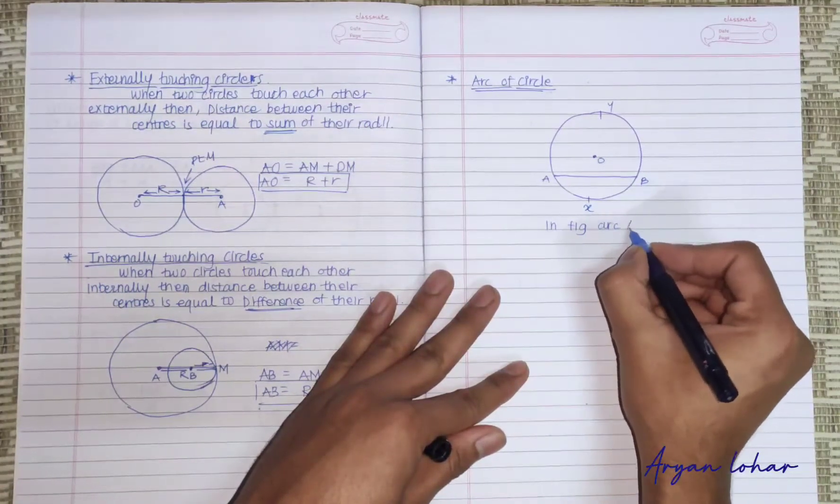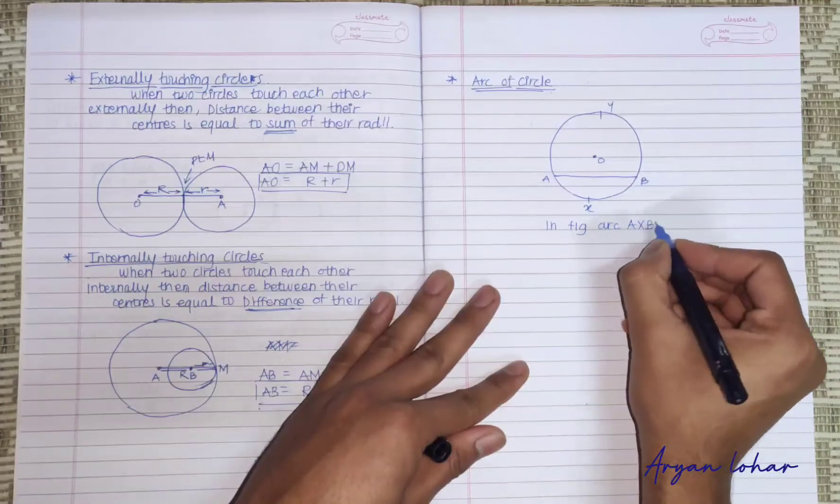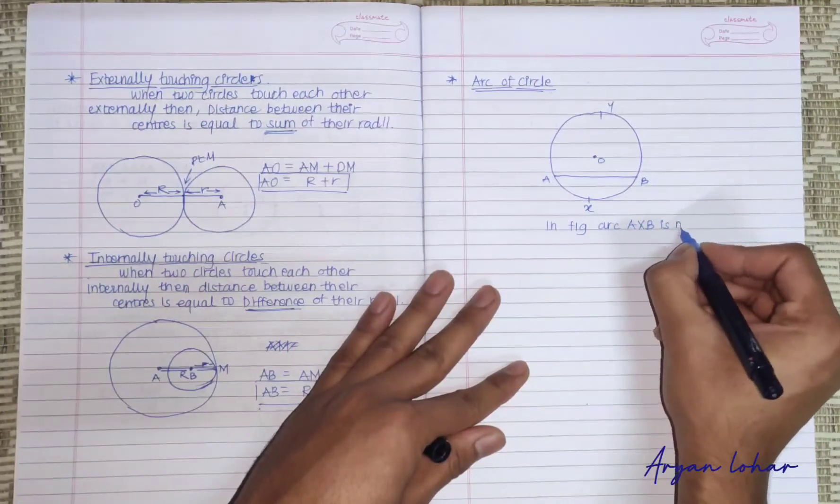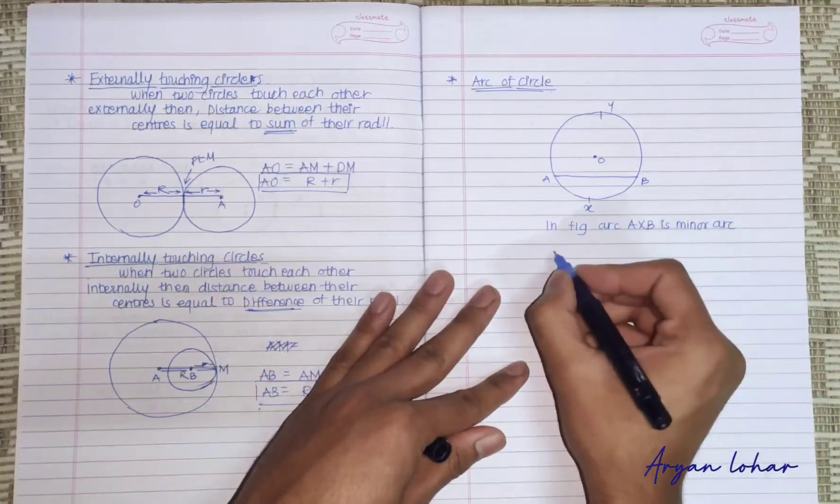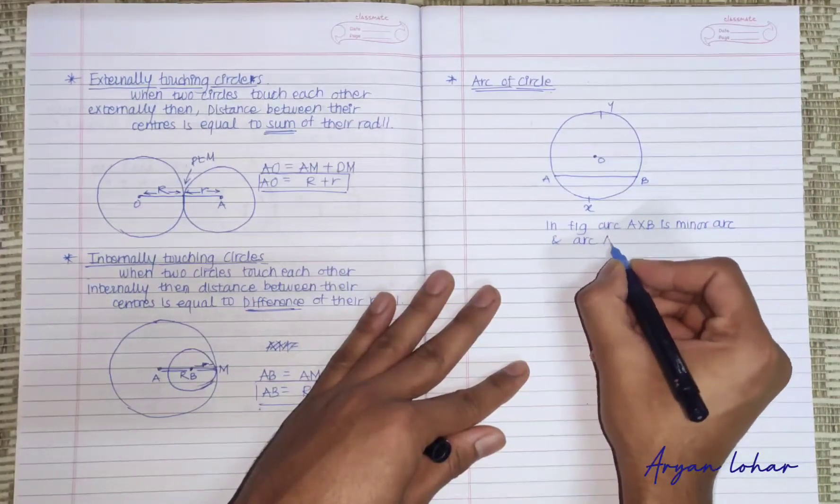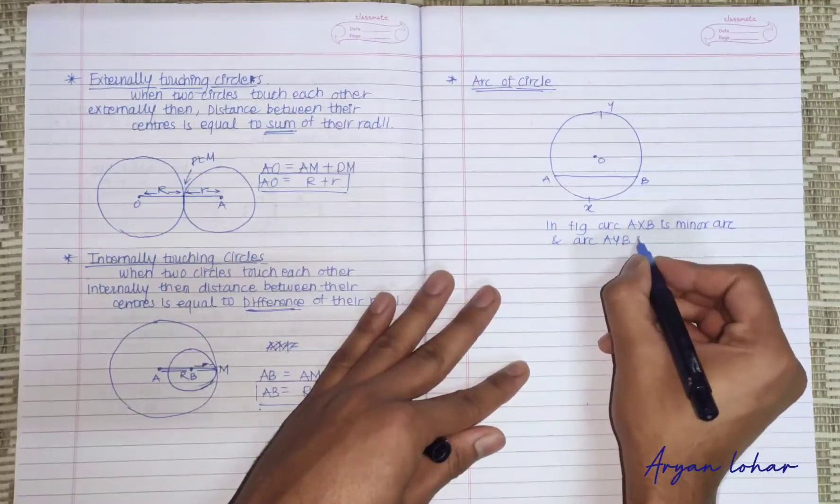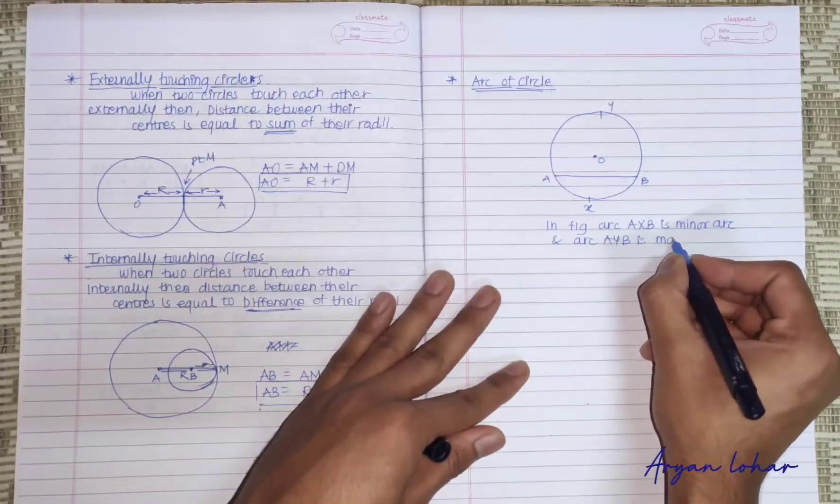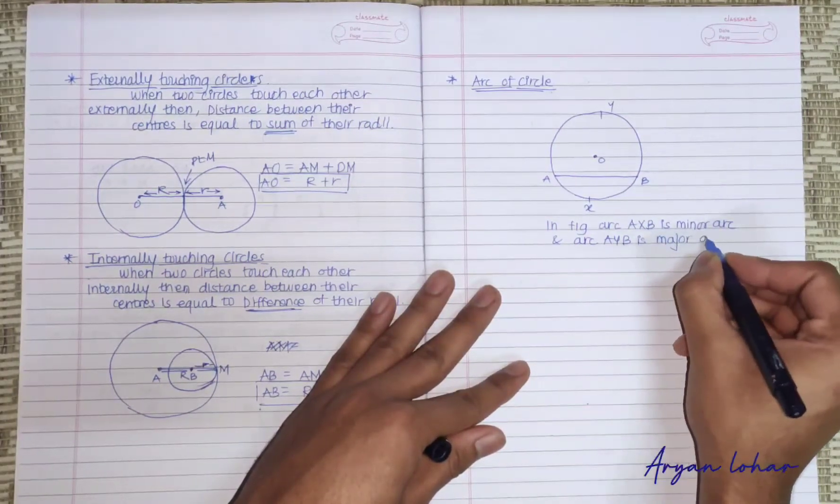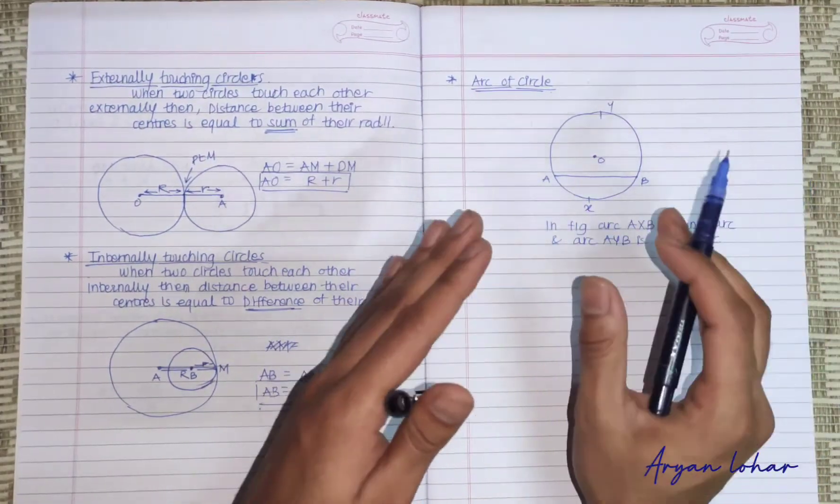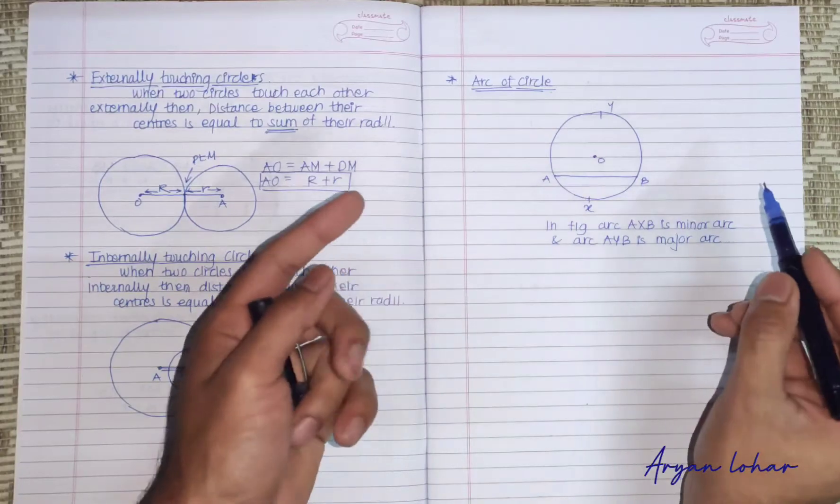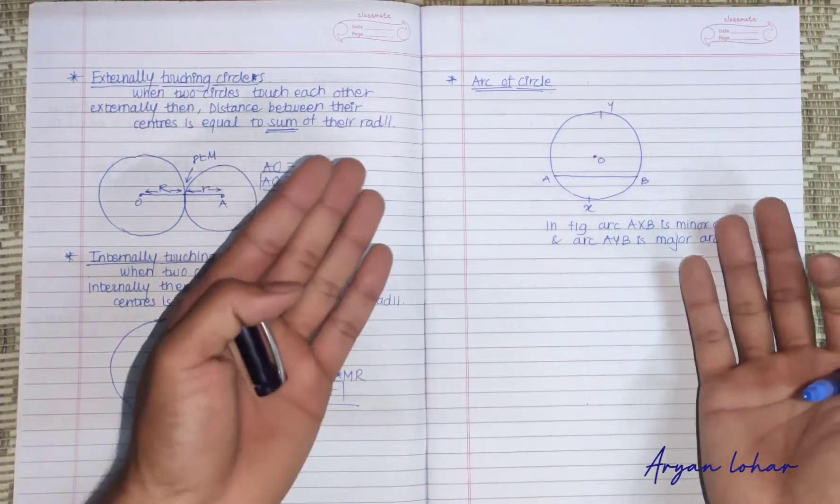Arc AXB is minor arc and arc AYB is major arc. Means AXB is small and AYB is bigger, major and minor.